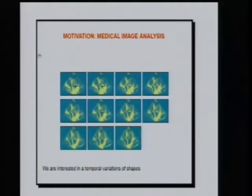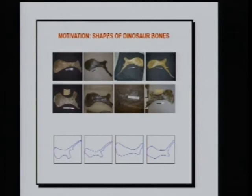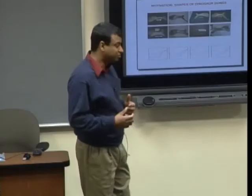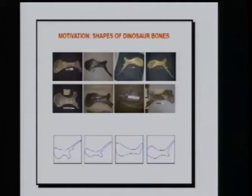Medical images are a very good example. Perhaps the most prominent area of applications of shape analysis is medical image analysis. In this case, we are interested in cardiac layers and the boundaries between them. Doctors currently manually extract these boundaries and evaluate heart health by studying how the boundaries change in time. We would like to do that automatically. Another example: people take pictures of dinosaur bones and classify dinosaurs by the shapes of those bones — sometimes complete, sometimes broken, so it's shape analysis with missing data.